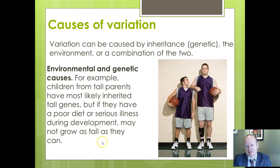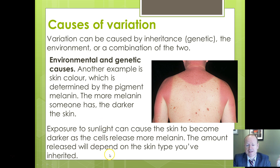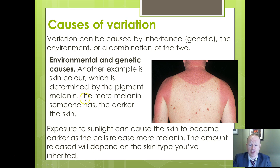Many characteristics are a combination of both environmental and genetic causes. Height, for example — you inherit tall genes, but poor diet or illness during development means you won't reach your full potential height. Sunburn is another example: people with very fair skin lack melanin, the pigment that helps protect against UV damage. The temporary colour change is environmental, but the skin type and melanin level are inherited — so it's a combination of both.